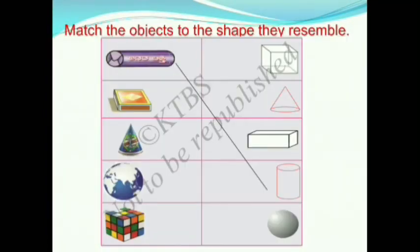Now we will solve some problems. We should match the objects on the left to the shapes on the right that they look like. The objects are: Agarbatti packet, Matchbox, Birthday Cap, Earth, and Rubik's Cube. The shapes are: Cube, Cone, Cuboid, Cylinder, and Sphere. First, the Agarbatti packet looks like a cylinder, so we match it with cylinder.